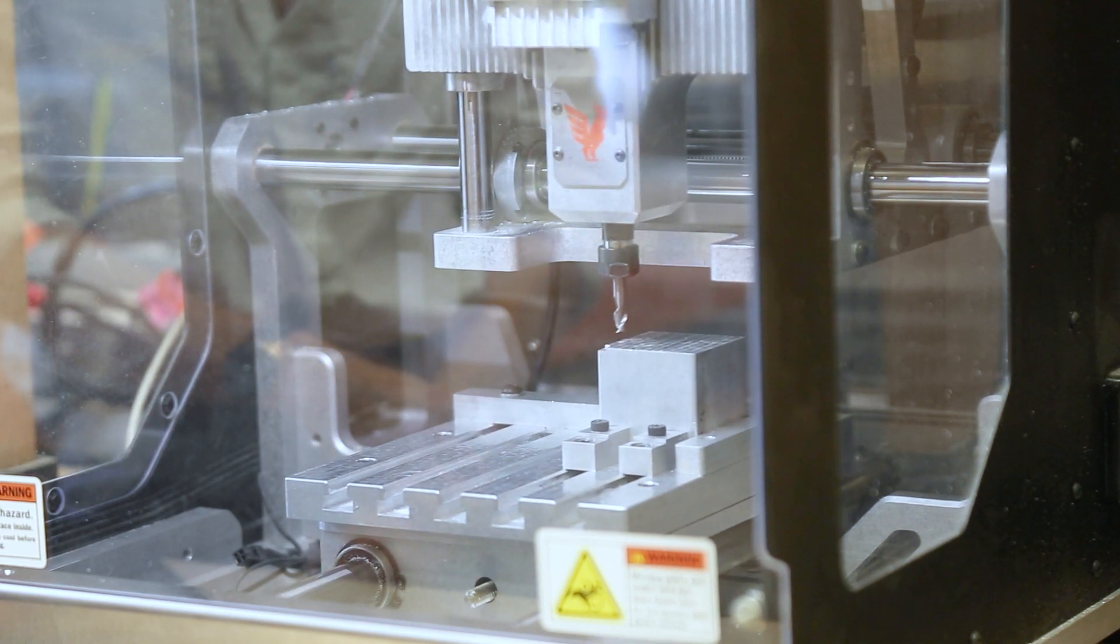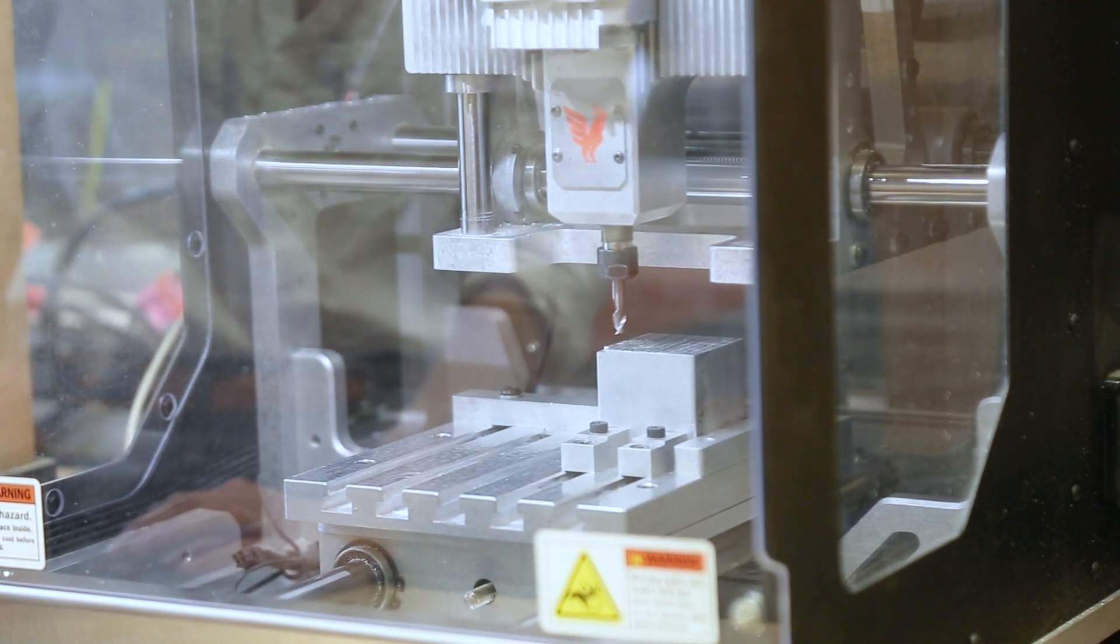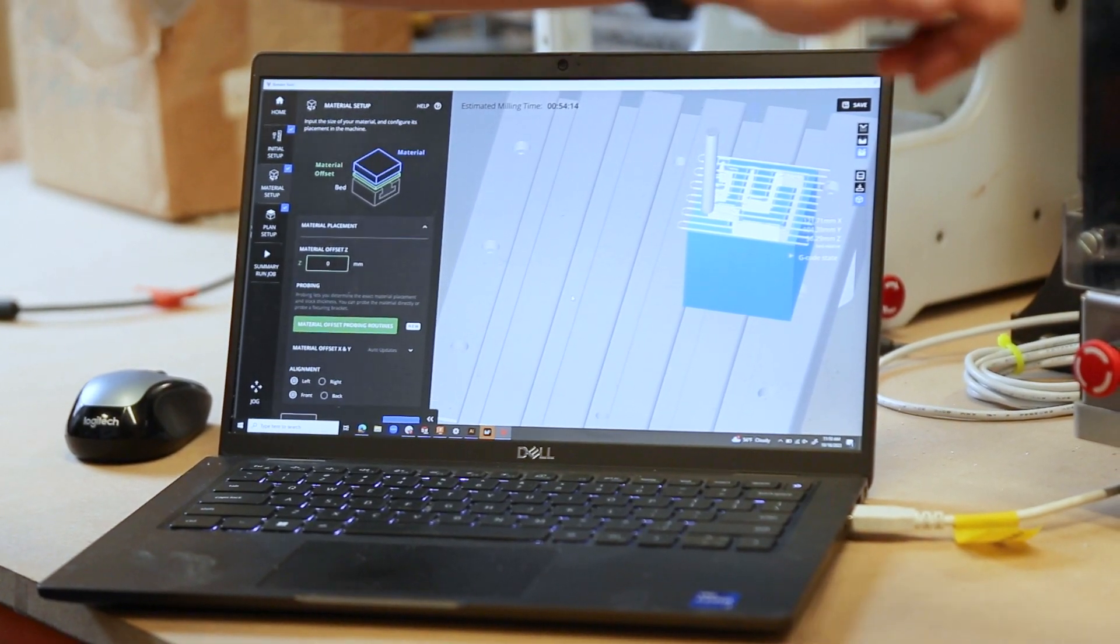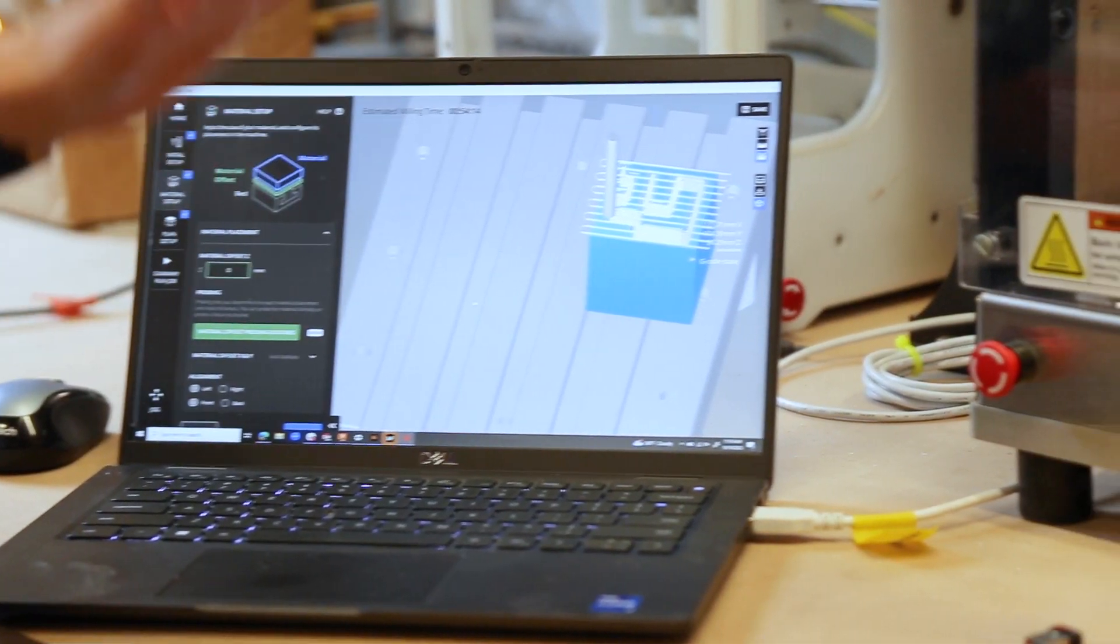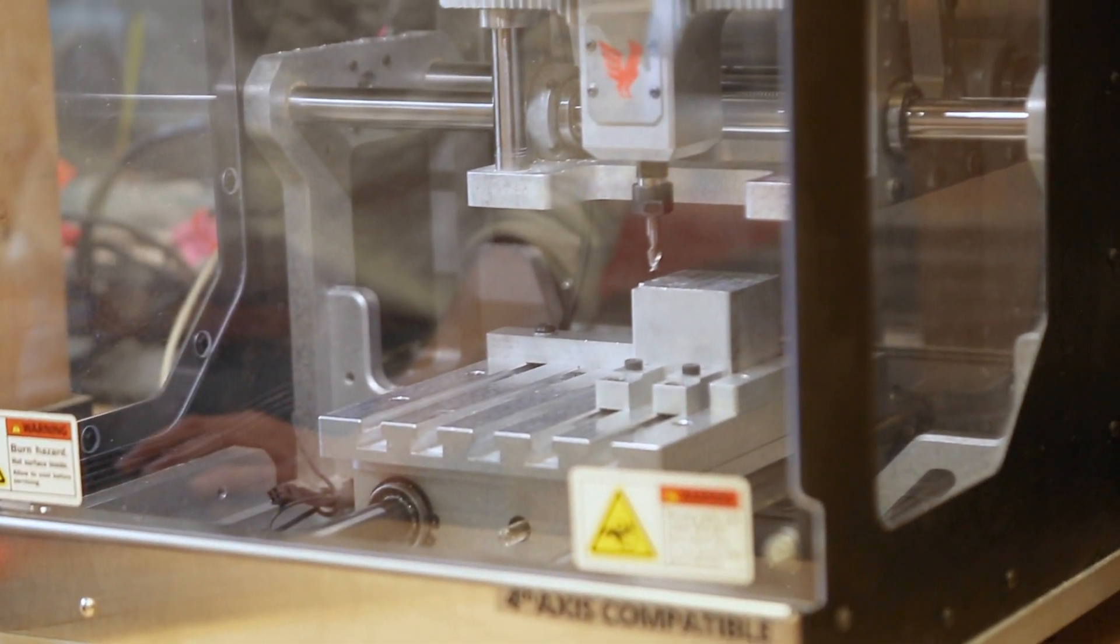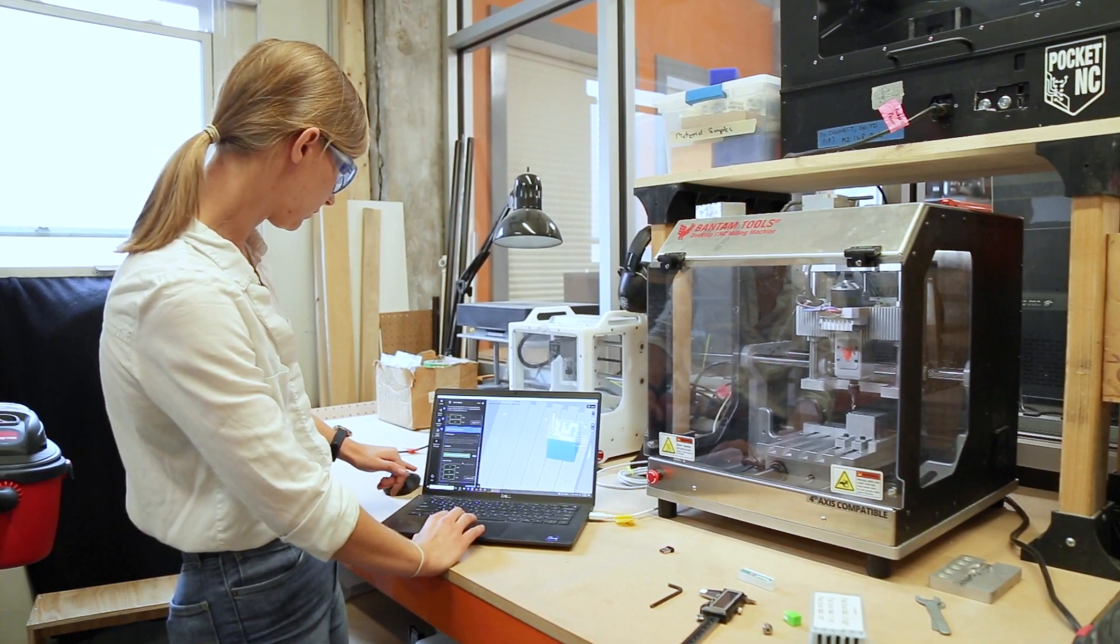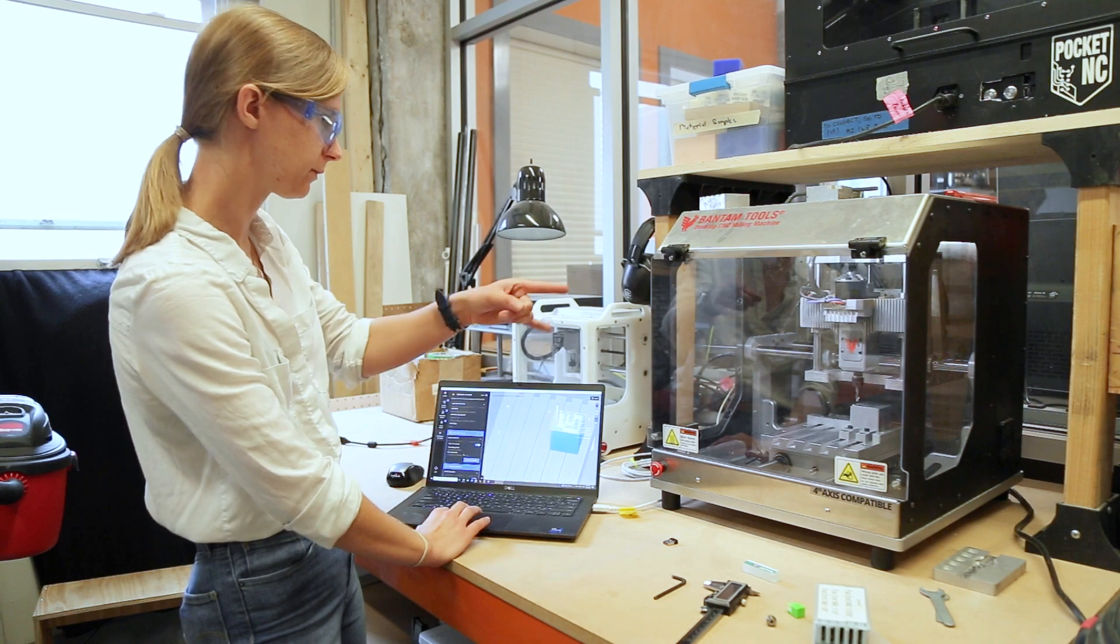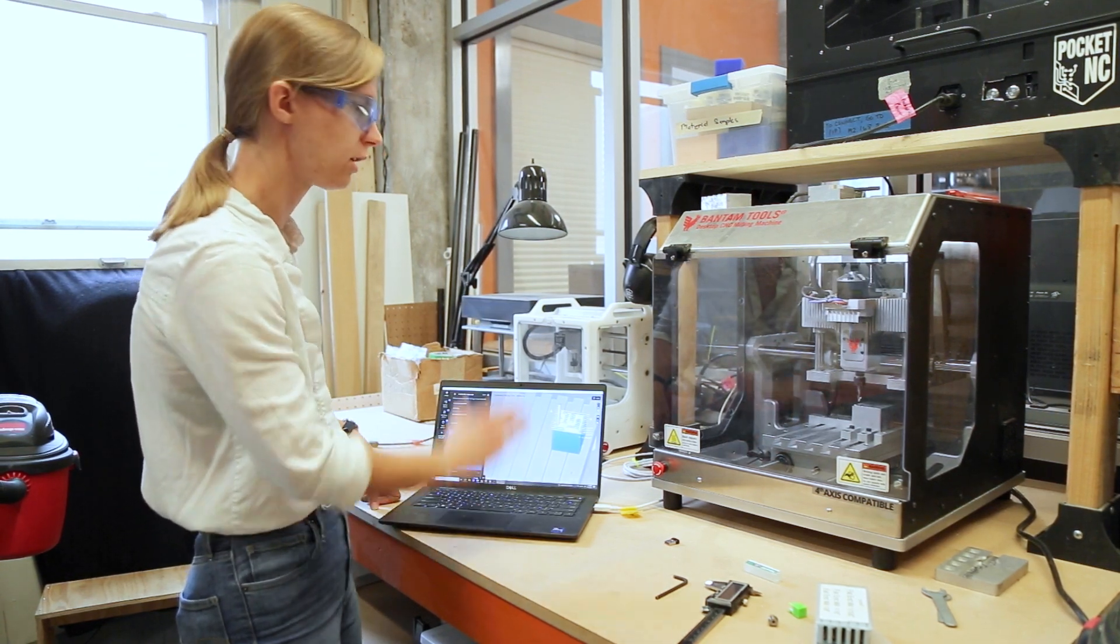Now what we should see is if we take a look in the software, our block is now sitting roughly in the same place that it is on our actual machine. So now we're gonna get started. We're gonna start off just with our first tool path and we're gonna mill off the top of the block so that it's nice and flat.